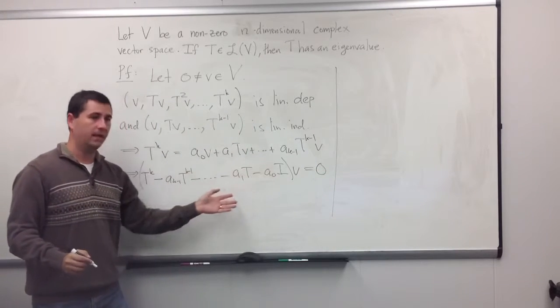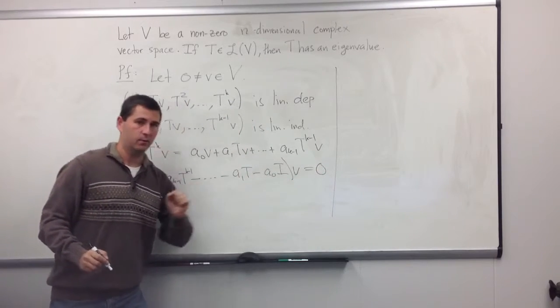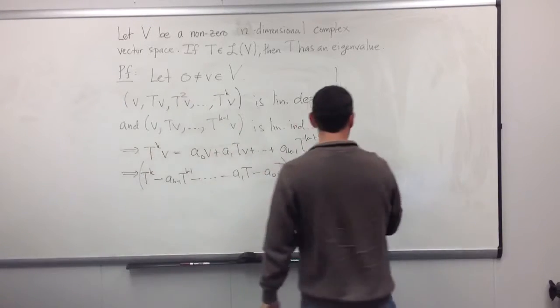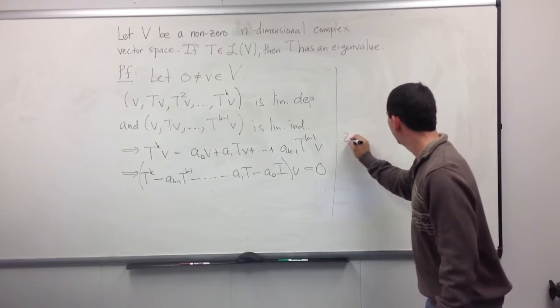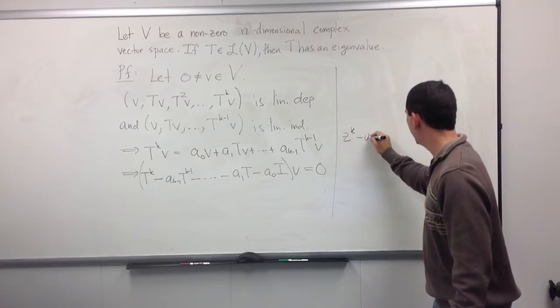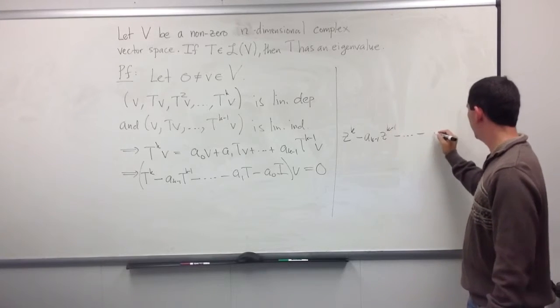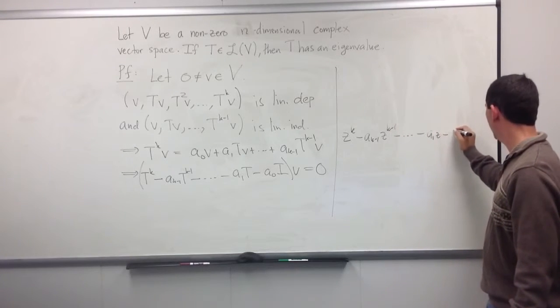So I have a polynomial in T applied to v, and that equals 0. Well, what's this polynomial? Well, over here, the polynomial we're getting is z^k minus a_(k-1) z^(k-1) minus a₁z minus a₀.